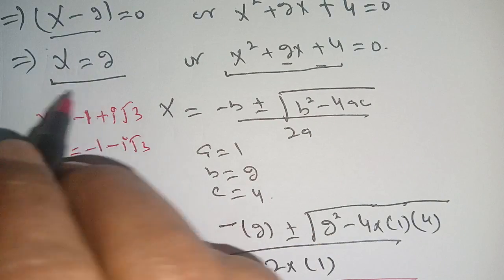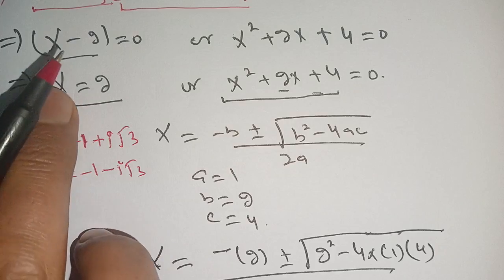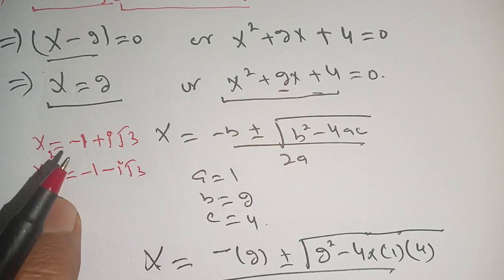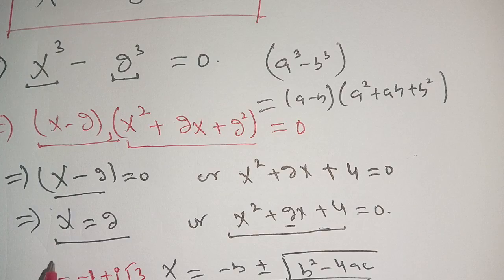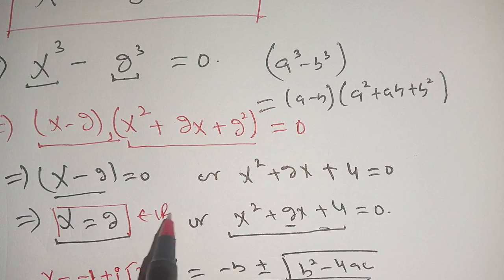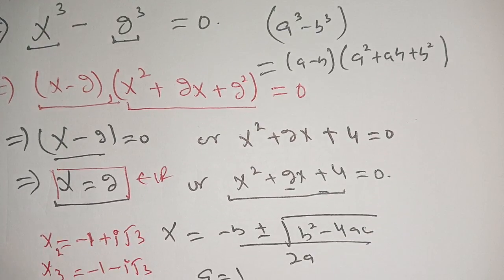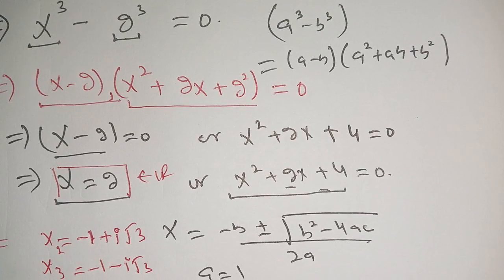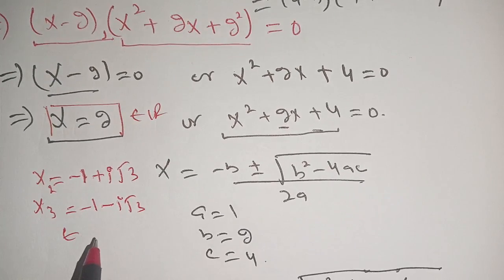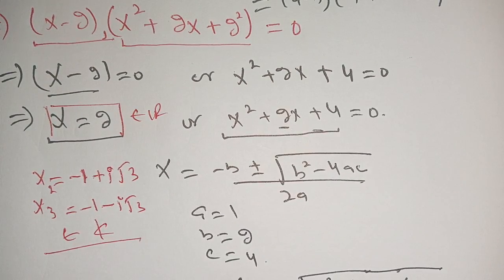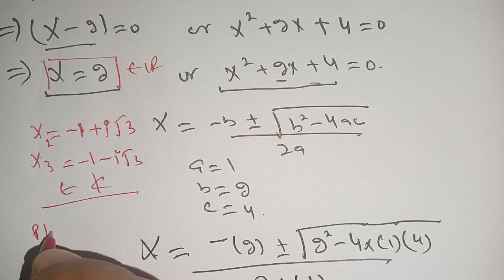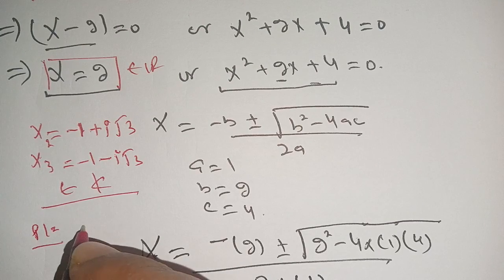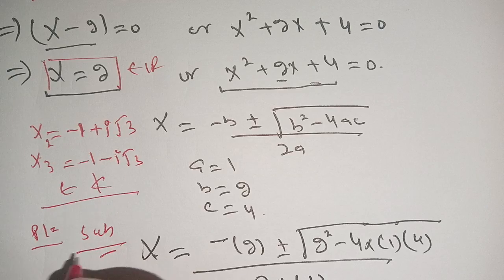So our three roots x1, x2, and x3 of this cubic equation are: x equals 2 (a real number), and x equals minus 1 plus iota root 3 and x equals minus 1 minus iota root 3, which belong to the complex plane. This is our solution. If you are new here, please subscribe to the channel for more informative videos. See you in the next video!